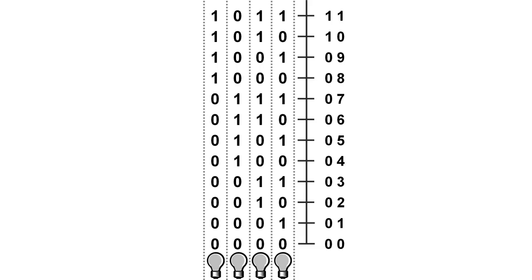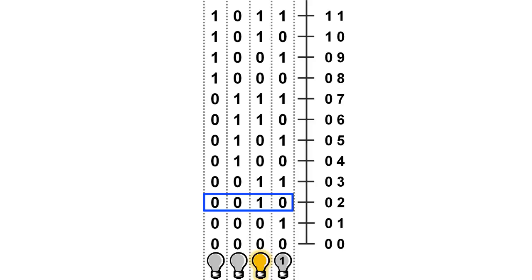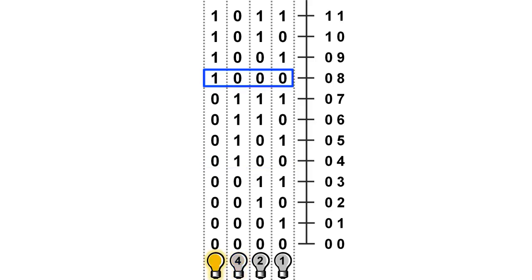Let's make this easier. When only one lightbulb is on, let's write the decimal number that it represents on the lightbulb itself. For instance, 1 in binary is also 1 in decimal, so we'll write that on that lightbulb. 10 in binary is 2 in decimal, 100 in binary is 4 in decimal, and 1000 in binary is 8 in decimal. From here, you just have to add up the numbers on the lightbulbs that are lit to find the equivalent number in decimal.